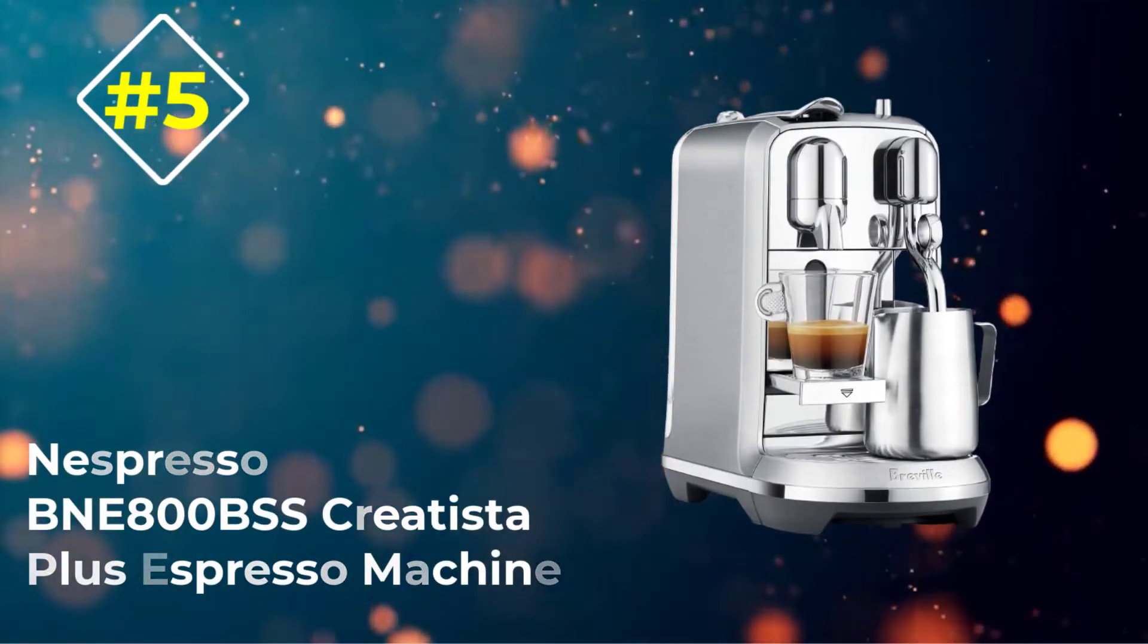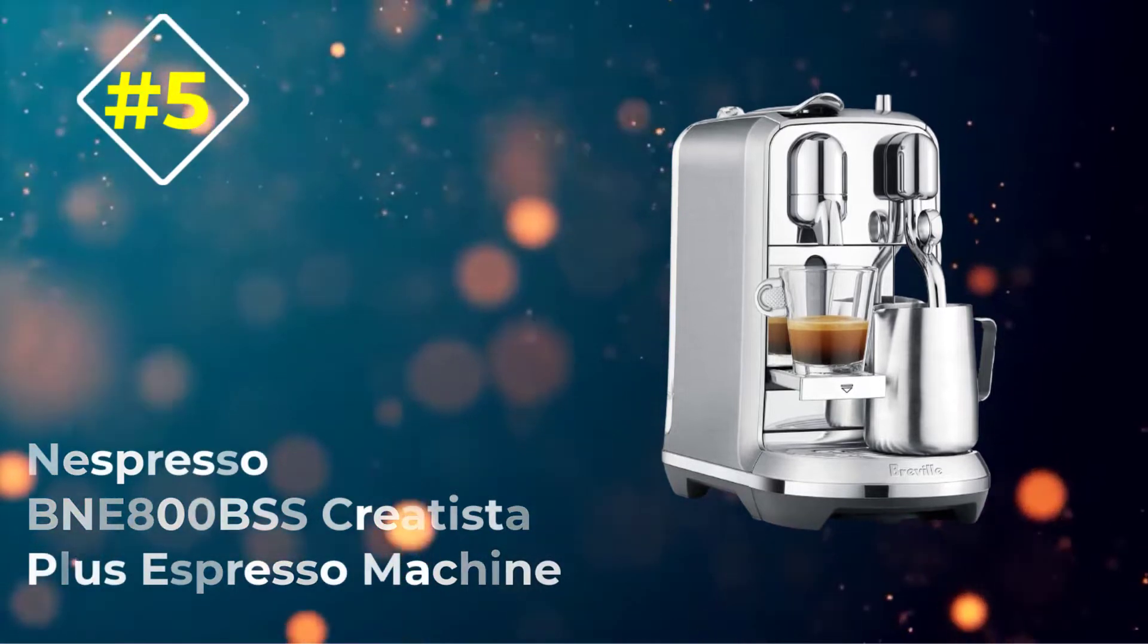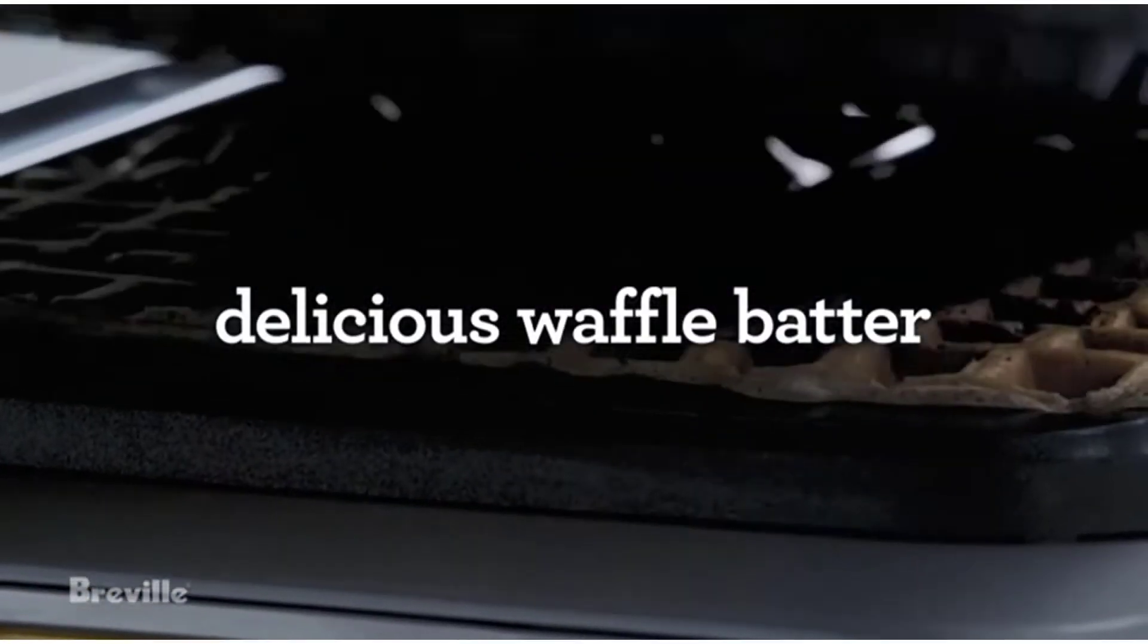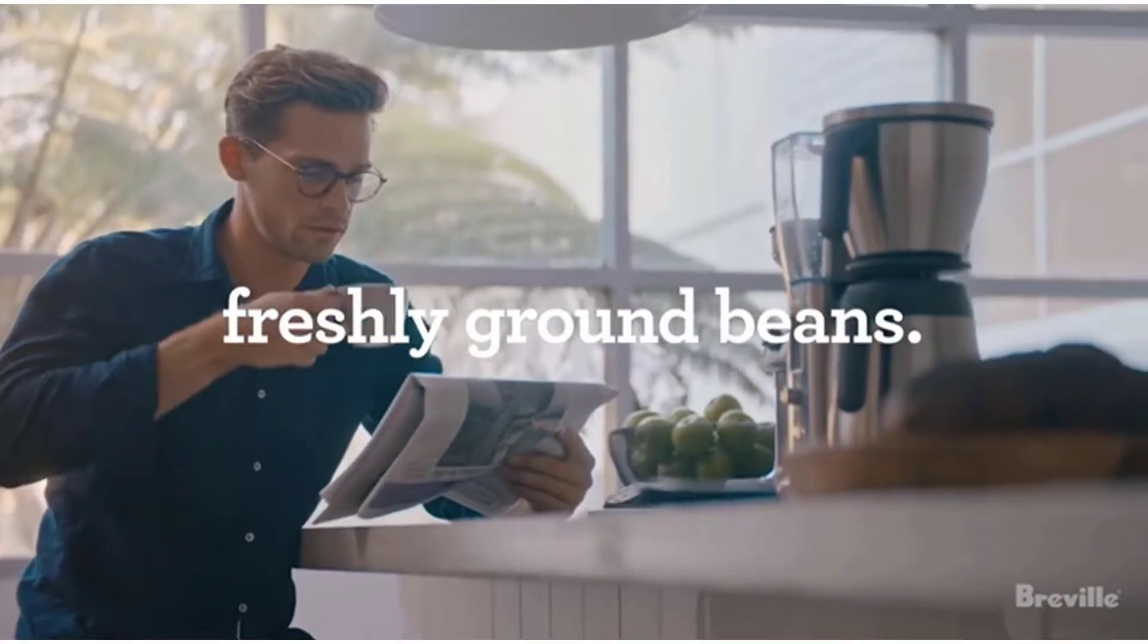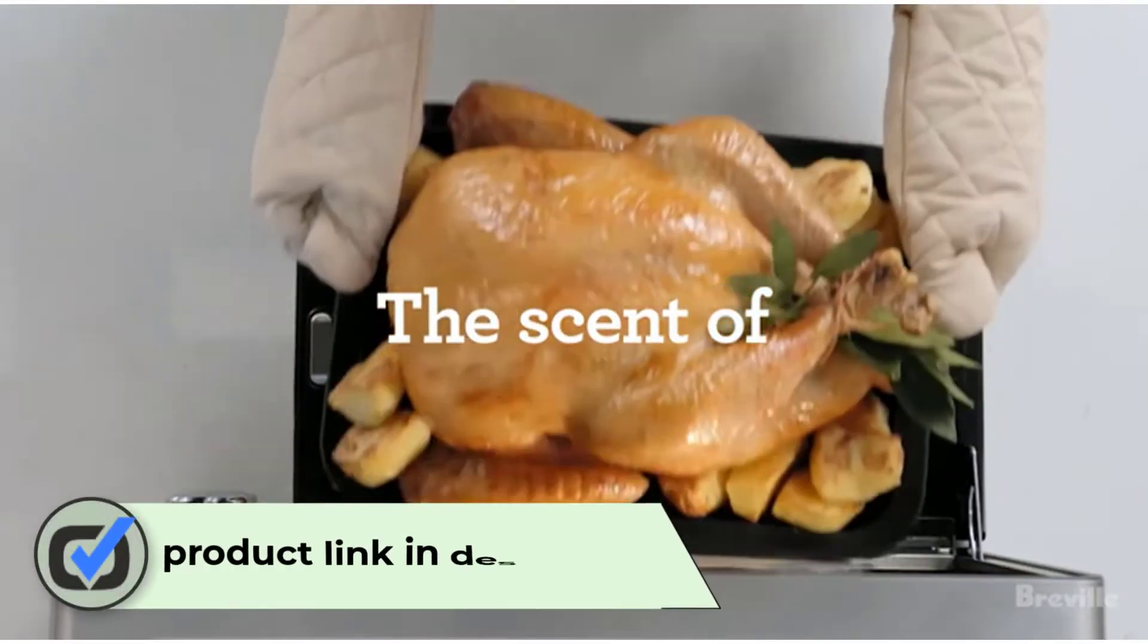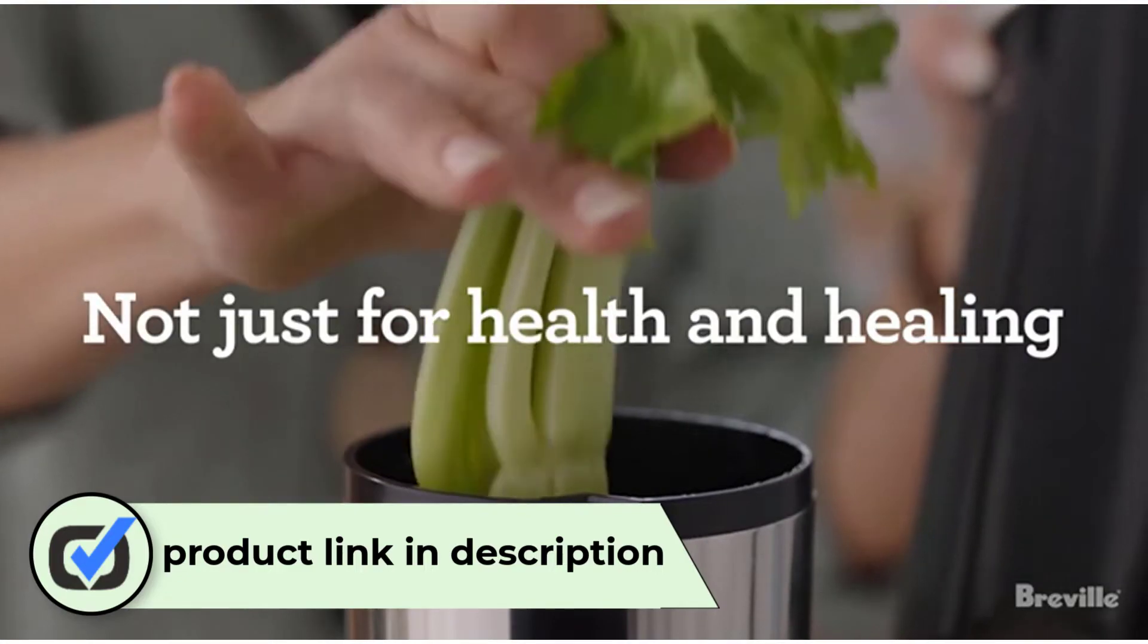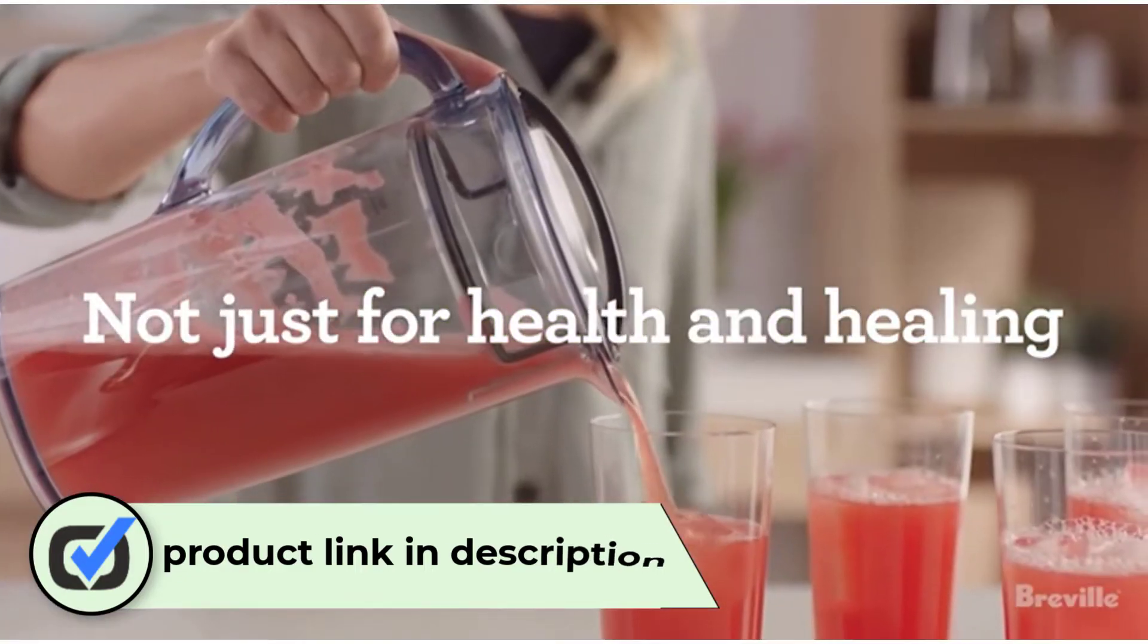Number 5. Nespresso BNE800BSS Creatista Plus Espresso Machine. It's pre-programmed with a handful of brewing options: straight espresso, lungo, and ristretto. Mixing these in with different milk preparations means you'll be able to craft dozens of specialty drinks. All this is possible with Nespresso's original capsules.